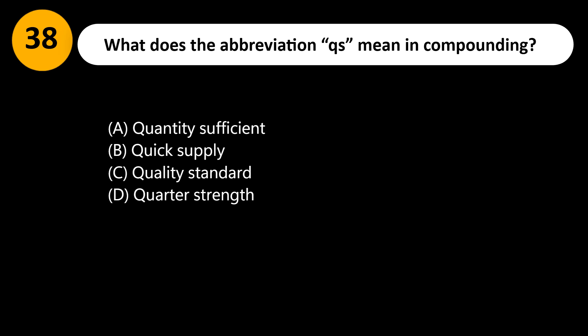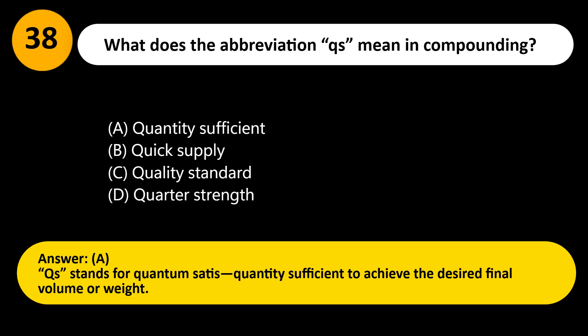What does the abbreviation QS mean in compounding? A. Quantity sufficient. B. Quick supply. C. Quality standard. D. Quarter strength. Answer: A. QS stands for 'quantum satis,' quantity sufficient to achieve the desired final volume or weight.